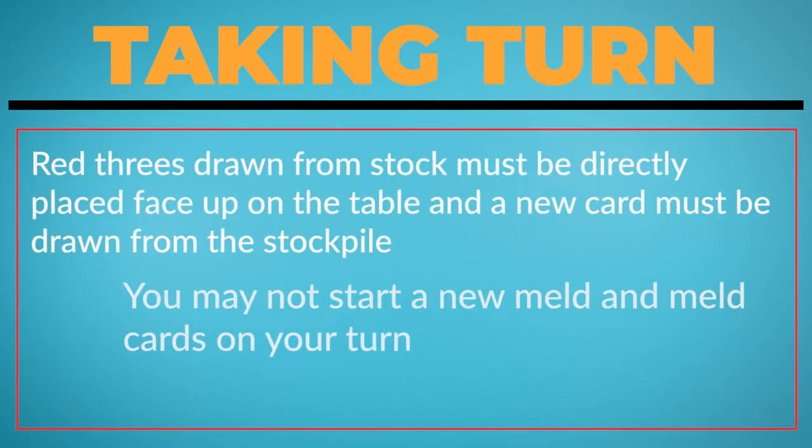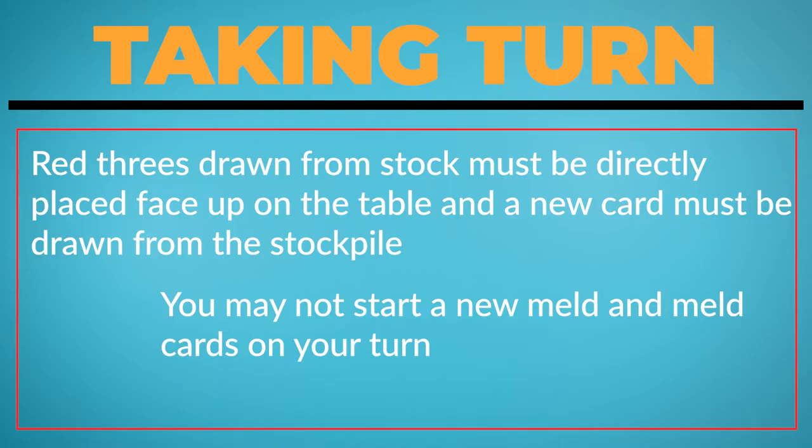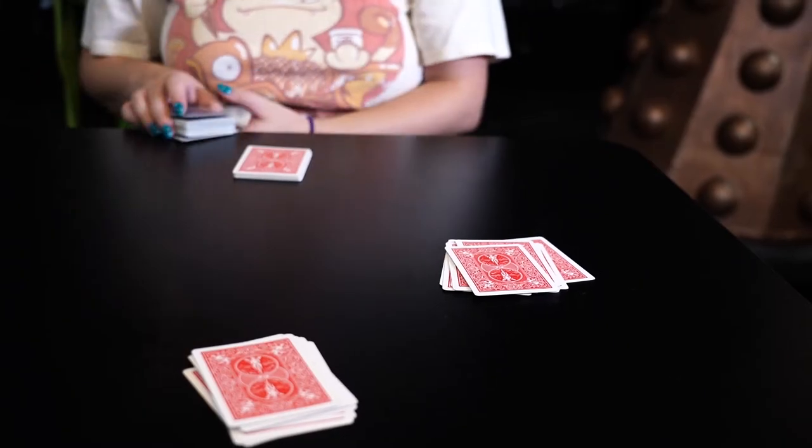Red threes drawn from stock must be directly placed face up on the table and a new card must be drawn from the stockpile. You may not start a new meld and meld cards on your turn. You must choose which action you wish to do, one or the other.